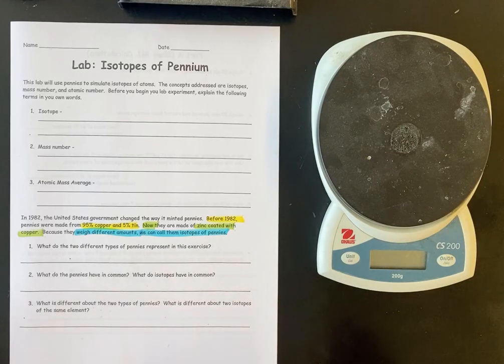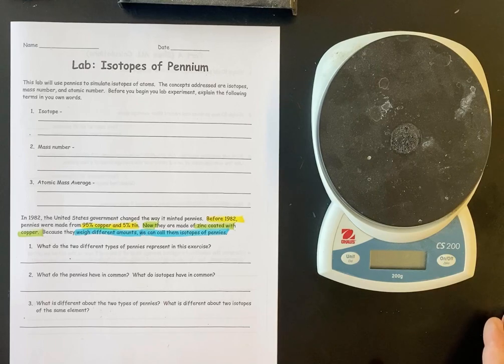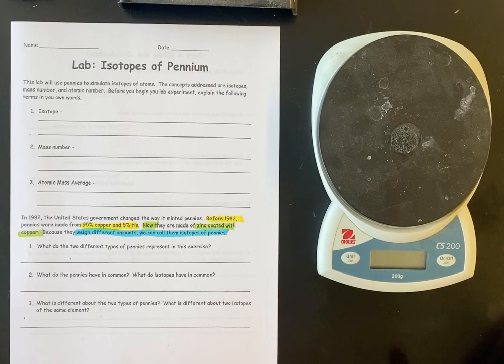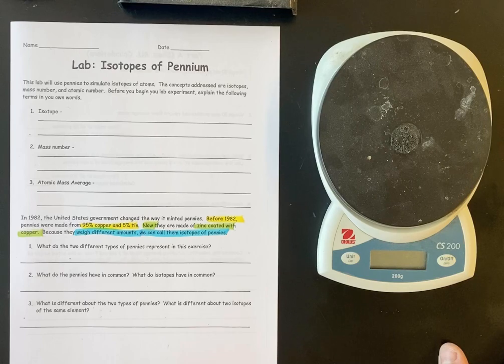Now for a little introduction. Before 1982, pennies were, and again this lab is based off pennies, pennies were pretty much all copper. They were 95% copper and 5% tin. After 1982, they changed the way they made them. Now the reason they did this was actually because the cost of copper went up, and so it ended up costing more than a penny to make a penny.